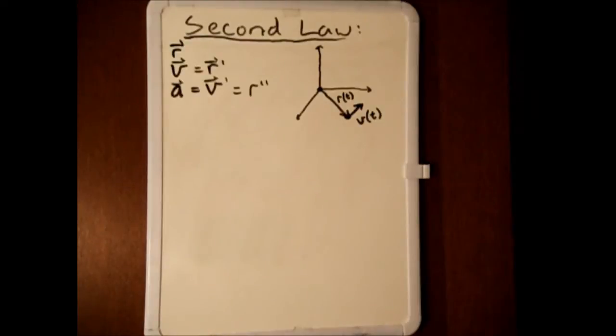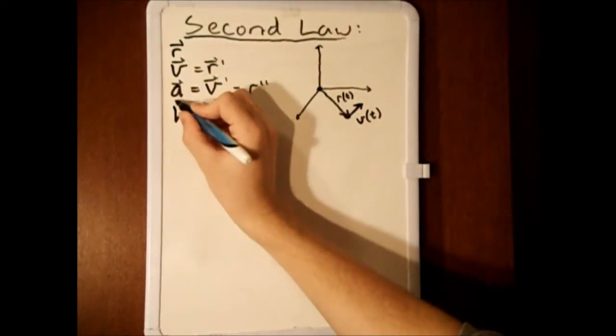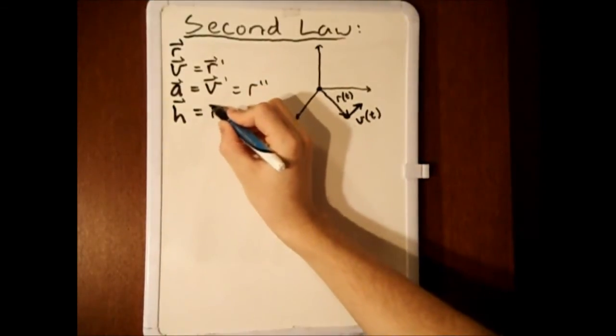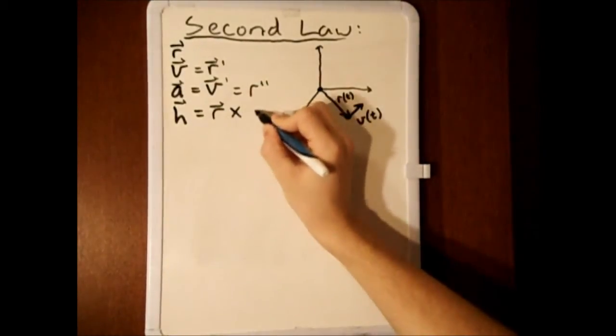Let us also define a new vector h as the cross product between the position vector r and the velocity vector v.